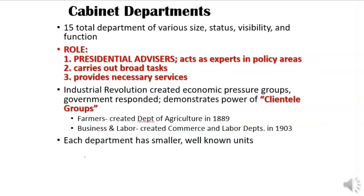Now let's start tackling the five parts of the bureaucracy. The ones most well-known are the cabinet departments — there are 15 total, with various sizes, statuses, and visibilities. Their main job is to be presidential advisors, acting as experts in their policy area. If the president has a question about the military, he goes to his Secretary of Defense. Same thing with education or transportation.